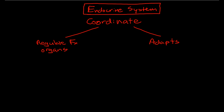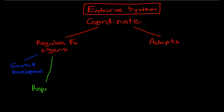One way the endocrine system regulates body tissues is that it controls growth and development. As our body begins as an embryo and develops into an adult, all the processes of growth that occur in all of the tissues are coordinated by the endocrine system. Another regulatory function is coordination of the reproductive system.